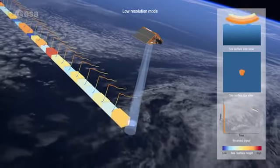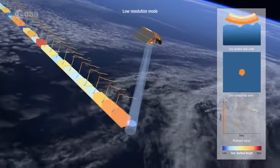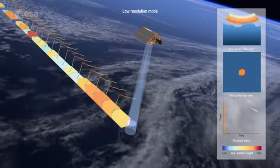The Sentinel-6 radar altimeter derives its height above the Earth by measuring the time it takes for a transmitted radar pulse to reflect off the Earth's surface.